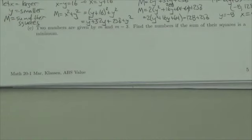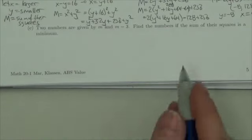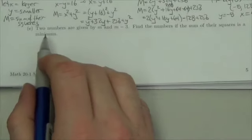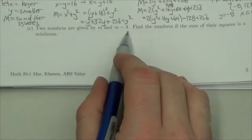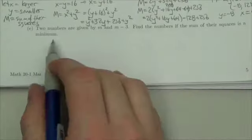Hey everybody, we're looking at the quadratic functions and equations review. This is question 20e. Two numbers are given by m and m minus 3. Find the numbers if the sum of their squares is a minimum.